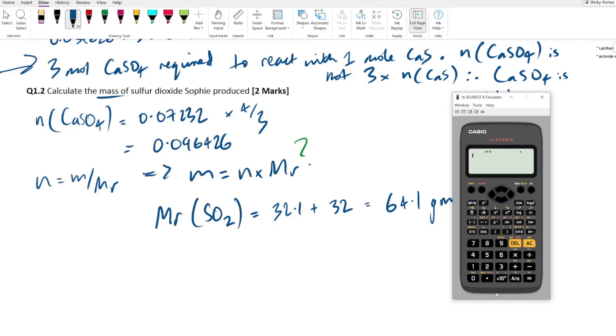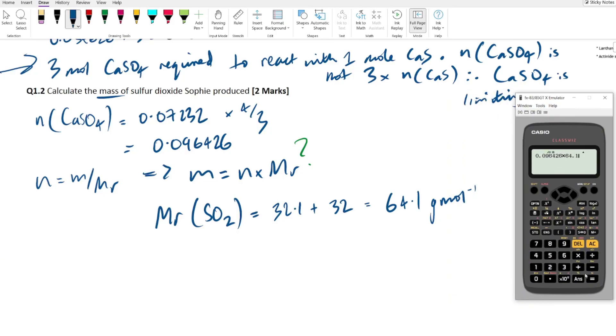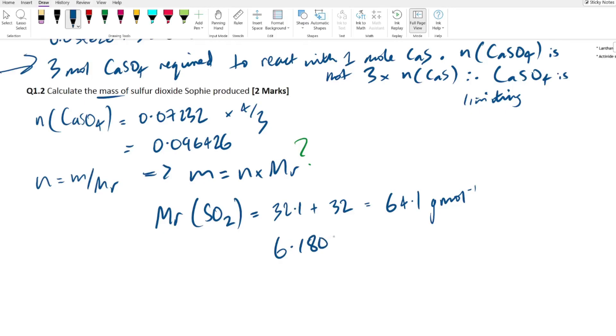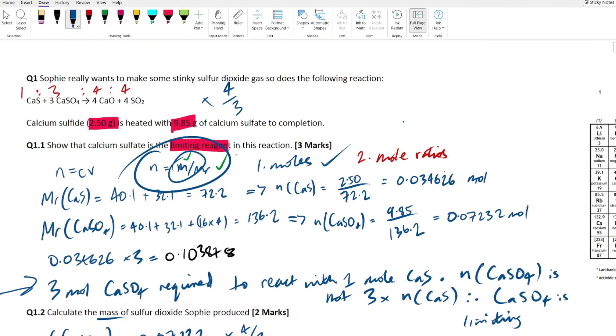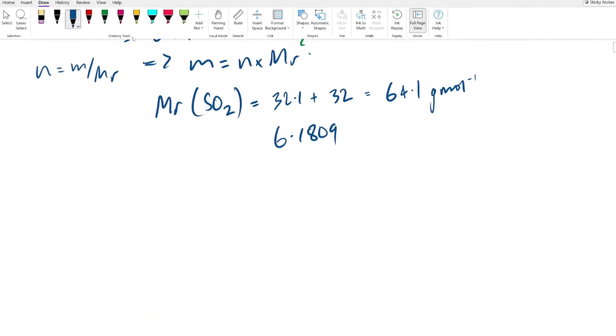So this is what we're going to do. We're going to do the moles, which is 0.096426 multiplied by 64.1, and that gives us an answer of 6.1809. Now what you're going to have to do is match the lowest number of significant figures that the data given to you in the question. In each case, we've got three, so I'm going to give my final answer to three sig figs.